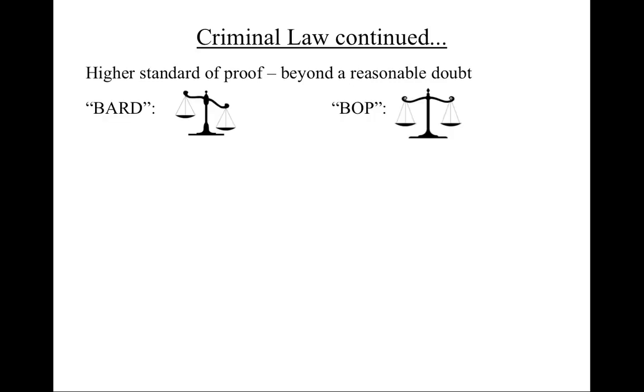Here are some important differences between criminal law and the law of torts or contracts. In criminal law, there is a higher burden of proof — proof beyond a reasonable doubt. In torts and contract cases, proof of a fact need only be more likely than not, sometimes called a balance of probabilities. Also, in criminal law, because the accused's liberty is at stake, the Crown must prove everything about the crime. In torts or contracts, sometimes the defending side is required to prove things.